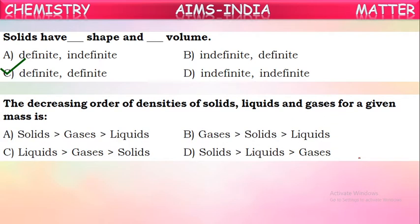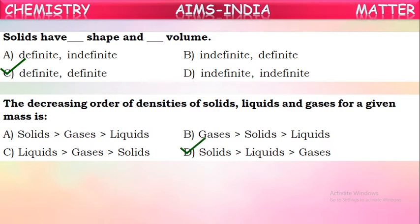Question 6: What is the decreasing order of densities of solids, liquids, and gases for a given mass? We know solids have maximum density and gases have the least density. So in decreasing order, we write the state with maximum density first and the state with least density last. Solids should be at the start and gases at the end. The correct order is solid > liquid > gas.